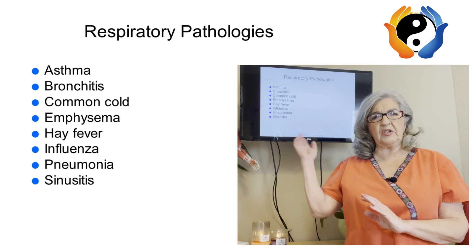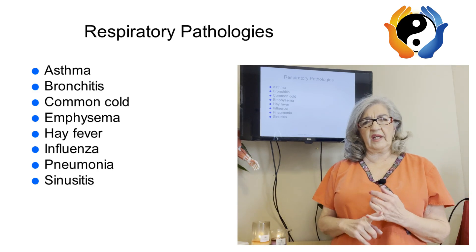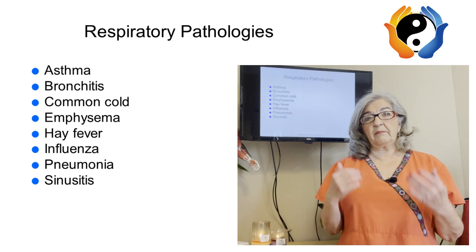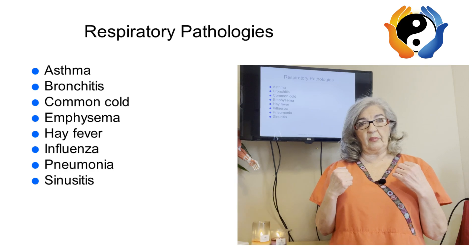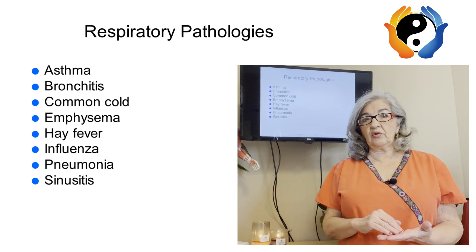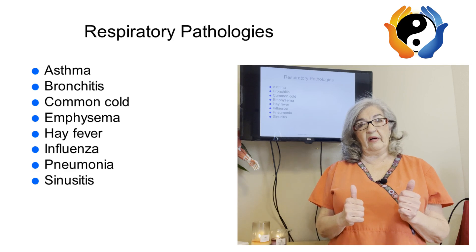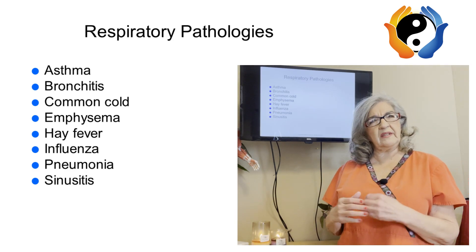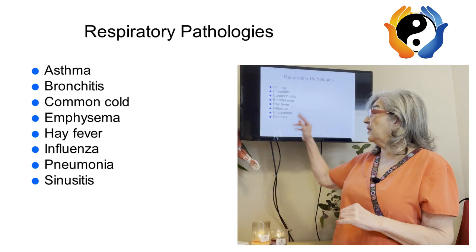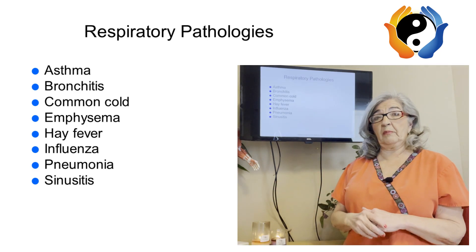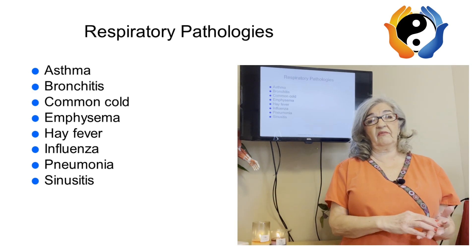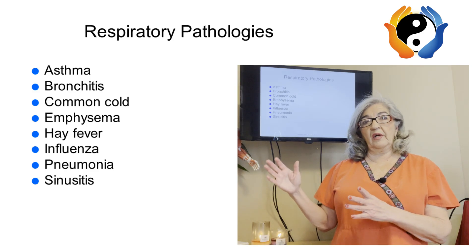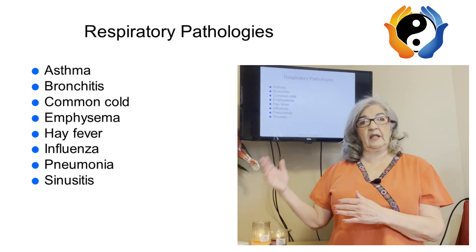I use sideline position with my clients quite often, especially when they have pathologies. Don't forget you have three options: supine, prone, and sideline. For respiratory and lung problems, prone is usually more beneficial than supine, and sideline can also work well. Always talk to your client. All of these are respiratory pathologies; some can be severe. Acute means less than three weeks; chronic means it's been going on longer than three weeks and keeps recurring.